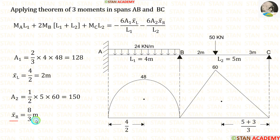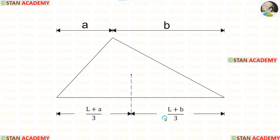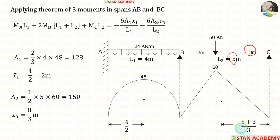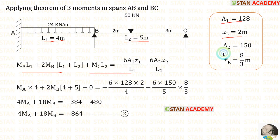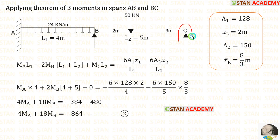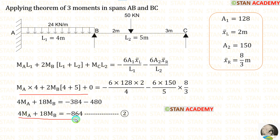Now let us calculate X-bar right. For this kind of triangle, the formula for the centroid distance towards the right is (L + B)/3. Here L = 5, B = 3, giving X-bar right = 8/3 meters. In the equation: L1 = 4, L2 = 5, area 1 = 128, X-bar left = 2, area 2 = 150, X-bar right = 8/3. Since point C is a simply supported end, MC = 0. After the calculations, we are making the second equation.